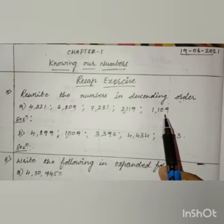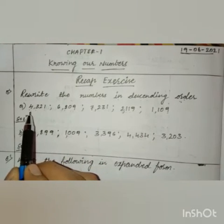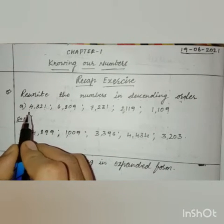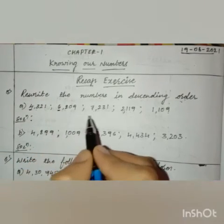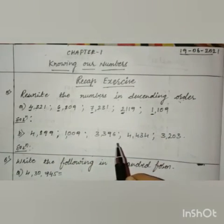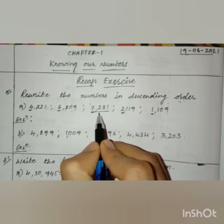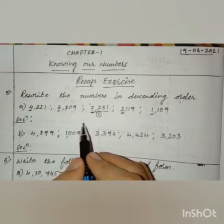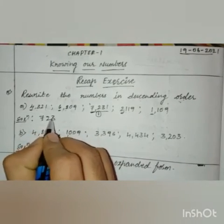All the numbers are 4-digit numbers. Let us find out the greatest number by comparing the thousands place. Here we have 4, in this number we have 6, here we have 7, in this number we have 2, and in this number we have 1. In the thousands place, 7 is the greatest number. So 7,231 is the greatest.